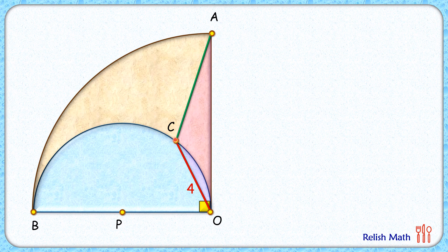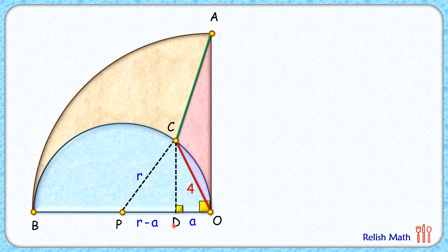Let's start by assuming the radius of this semicircle as r centimeters. From point C, let's drop a perpendicular on OB. Here, let's assume this length OD is a centimeters, and thus this remaining length PO is r, and thus the PD length will be r minus a. So here we have got two right-angle triangles.